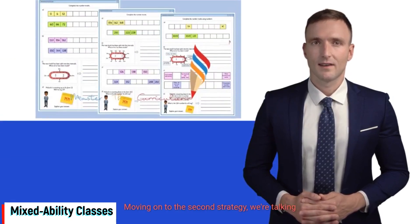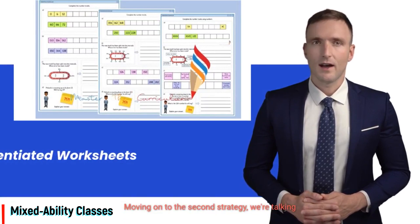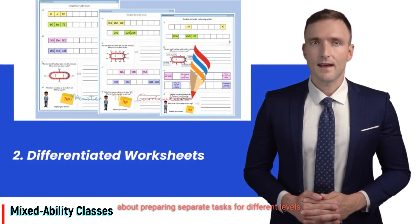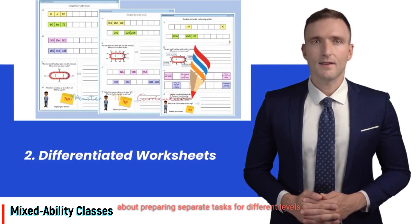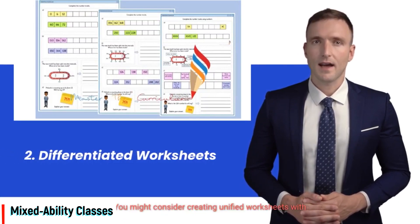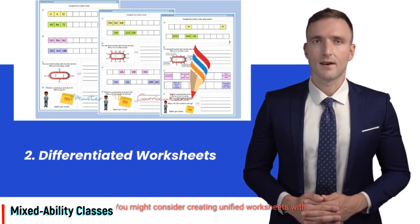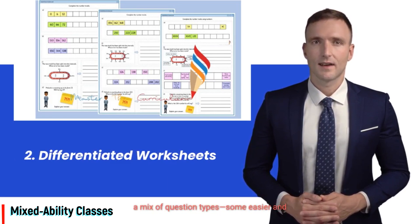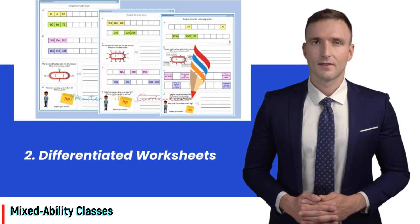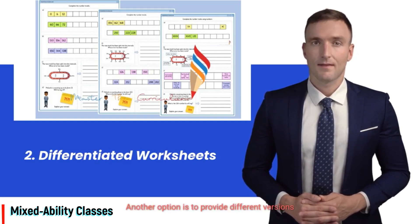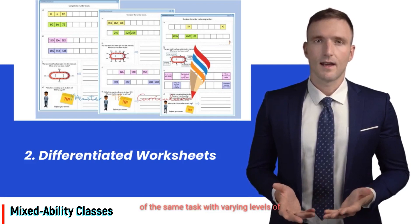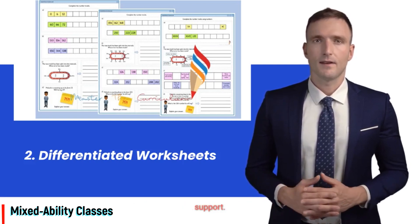Moving on to the second strategy, we're talking about preparing separate tasks for different levels. You might consider creating unified worksheets with a mix of question types, some easier and some harder, perhaps divided by a horizontal line. Another option is to provide different versions of the same task with varying levels of support.